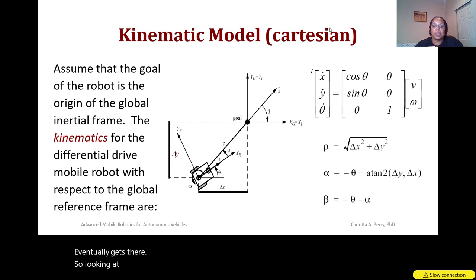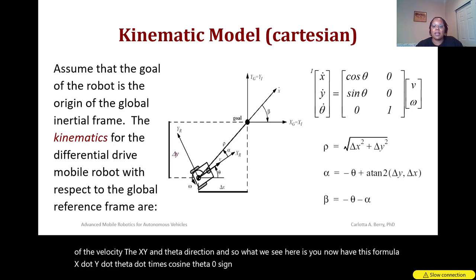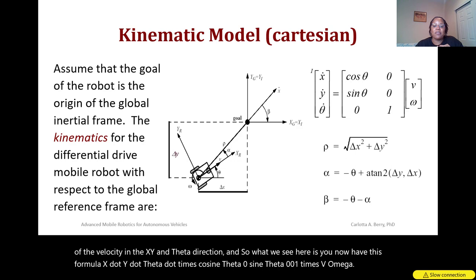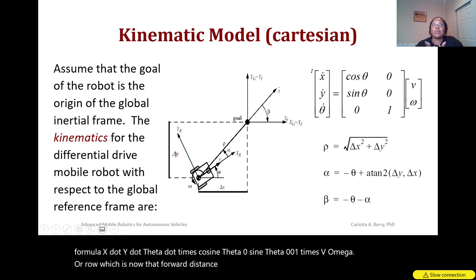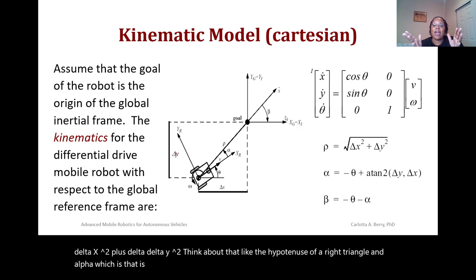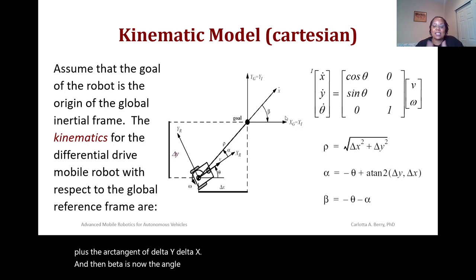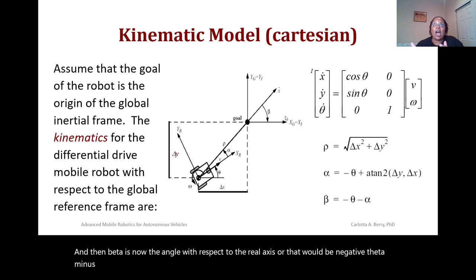Another way to think about the kinematics is in terms of velocity in the x, y, and theta directions. The formula gives x-dot, y-dot, theta-dot as: cosine theta, zero, sine theta, zero, zero, one, times v and omega. Rho — the forward distance between the robot and the goal — is the square root of delta-x squared plus delta-y squared, like the hypotenuse of a right triangle. Alpha, the yaw, is negative theta plus the arc tangent of delta-y over delta-x. Beta is the angle with respect to the real axis: negative theta minus alpha. You're tracking how that angle and distance change as the robot moves toward the goal.